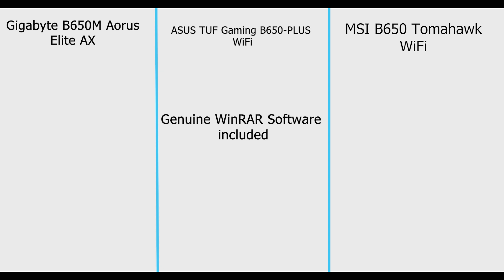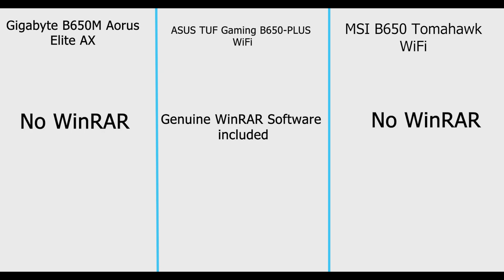ASUS comes with WinRAR software, whereas Gigabyte and MSI do not include a genuine WinRAR software copy. This was the comparison between MSI B650 Tomahawk versus ASUS B650 Gaming Plus TUF versus Gigabyte B650 M Aorus Elite AX. All three motherboards are equipped with Wi-Fi, and purchase links for all of them are in the description below.